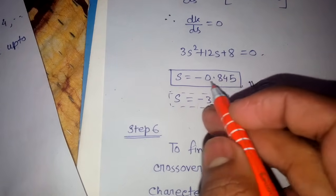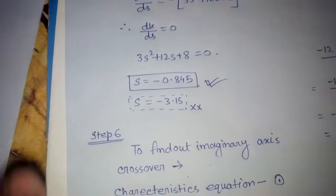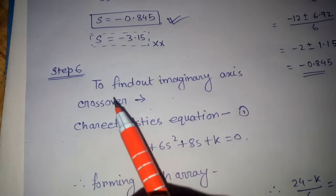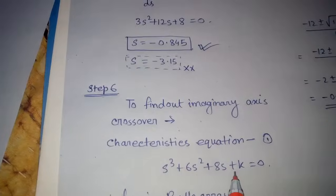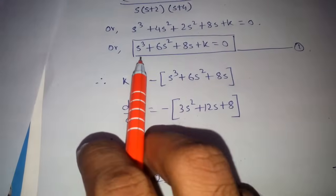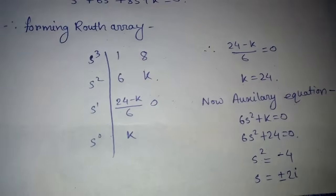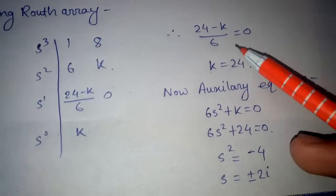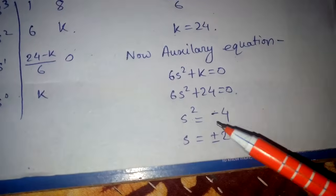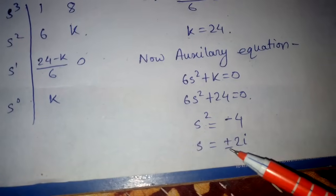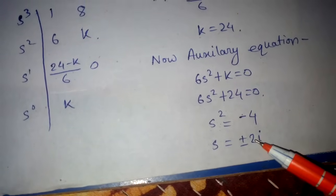Since there cannot be any breakaway point between minus 2 and minus 4, the point minus 3.15 does not exist on the root locus. The valid breakaway point is minus 0.845 since it lies between 0 and minus 2. Step 6: find the imaginary axis crossover. Writing the Routh array for the characteristic equation s³ + 6s² + 8s + k = 0, setting the appropriate row to zero gives k = 24. The auxiliary equation 6s² + 24 = 0 gives roots s = ±2j.